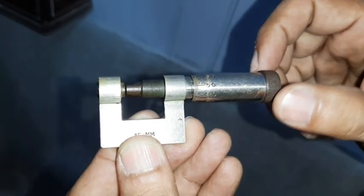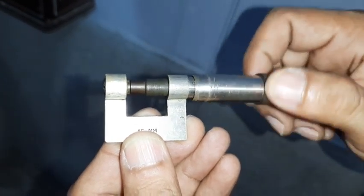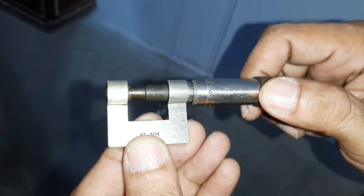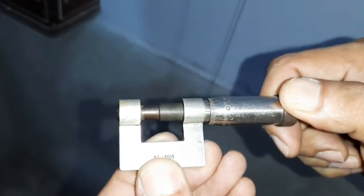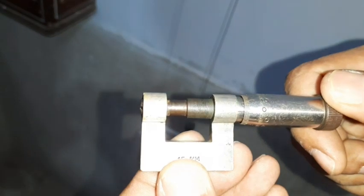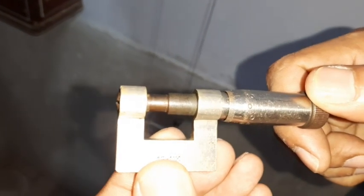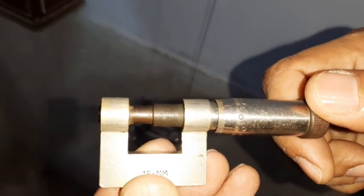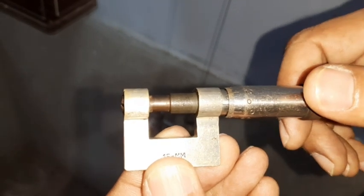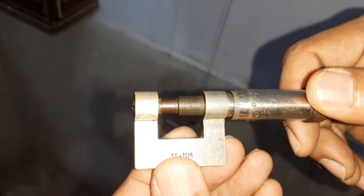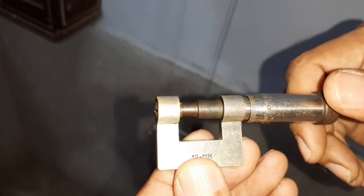So first we have to check its zero error. It's two units below zero, so we have to add two units with each reading.